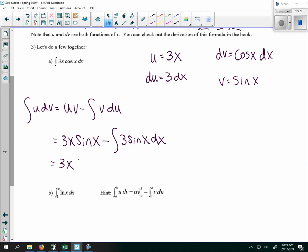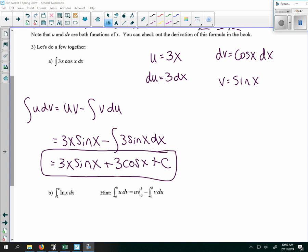So I have 3x sine x. What is the antiderivative of sine x? Yeah, it's going to be negative 3 cosine x. So I have minus a negative, so this becomes a plus 3 cosine x plus c.